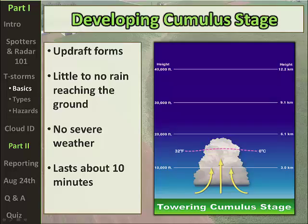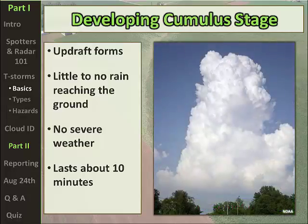In the developing cumulus stage, the initial updraft forms and air begins to rise. Little to no rain is reaching the ground, no severe weather is occurring, and this stage lasts about 10 minutes. In the diagram, the yellow arrows represent that initial updraft forming. The purple dashed line represents the freezing line — much of the updraft is below it, so there's no evidence of precipitation falling from the base of the cloud.